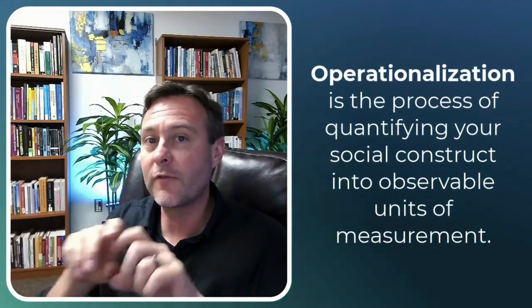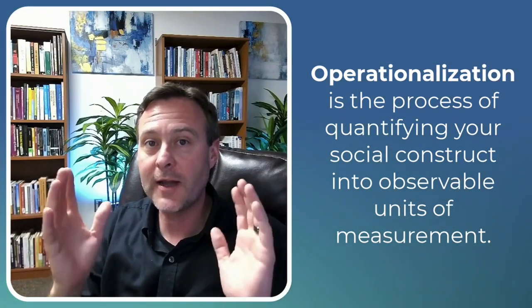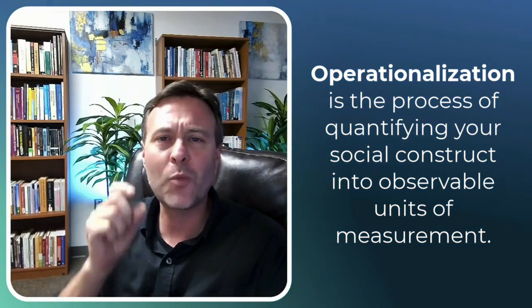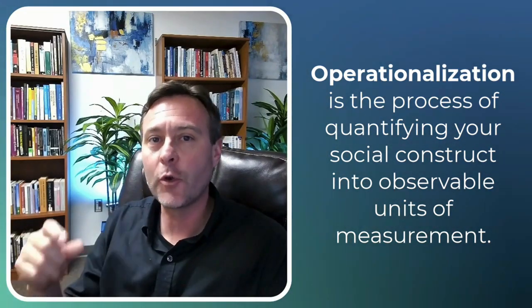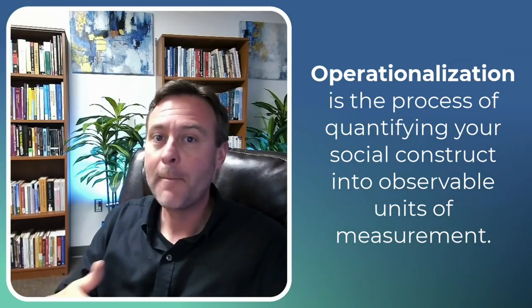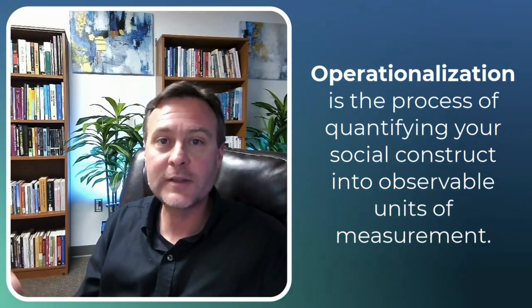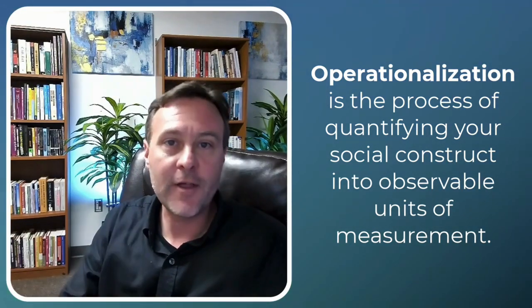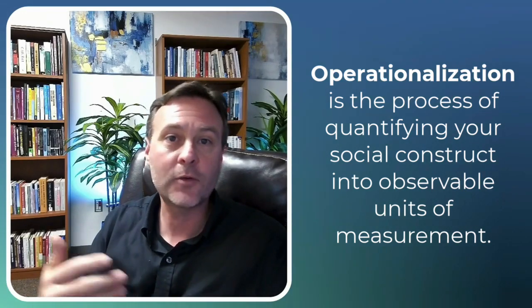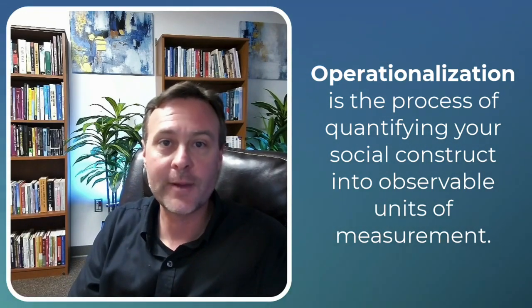And then you take it one step further. Once you've conceptualized it or given a working definition, we then have to figure out what is one unit of that thing. How are we actually going to measure it? This is a science. Many disciplines deal with the human experience, but we actually need to quantify things so we can analyze data on it. That's how we can detect or try to find patterns in social behavior.